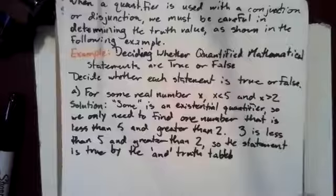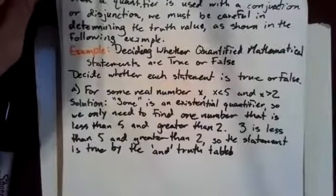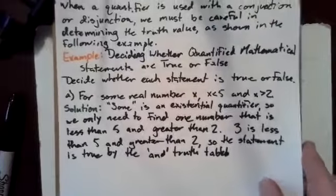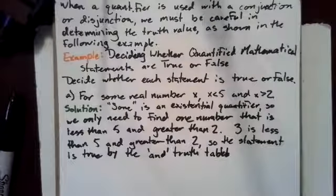When a quantifier is used with a conjunction or disjunction, we must be careful in determining the truth value, as shown in the following example. Decide whether each statement is true or false.